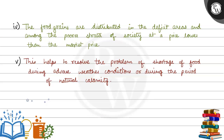Fourth point: the food grains are distributed in the deficit areas among the poorer strata of society at a lower price — lower than the market price. यह जो food grains collect किये इनको deficit areas में distribute किया जाता है, जहां food grains available नहीं हैं, ऐसे areas में जो लोग afford नहीं कर सकते उन्हें market price से कम price पर दिया जाता है.